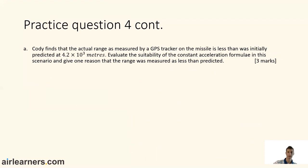Alright, that should say B, so ignore that. B. Cody finds that the actual range as measured by a GPS tracker on the missile is less than was initially predicted at 4.2 × 10³ metres. Evaluate the suitability of the constant acceleration formula in this scenario and give one reason that the range was measured as less than predicted. Three marks, it's an explanation question so it may take you about four minutes. But again, try to find something that gives you three kind of points or three things that answer the question, which should constitute those three marks. So pause the video and do the question and come back when you're ready.